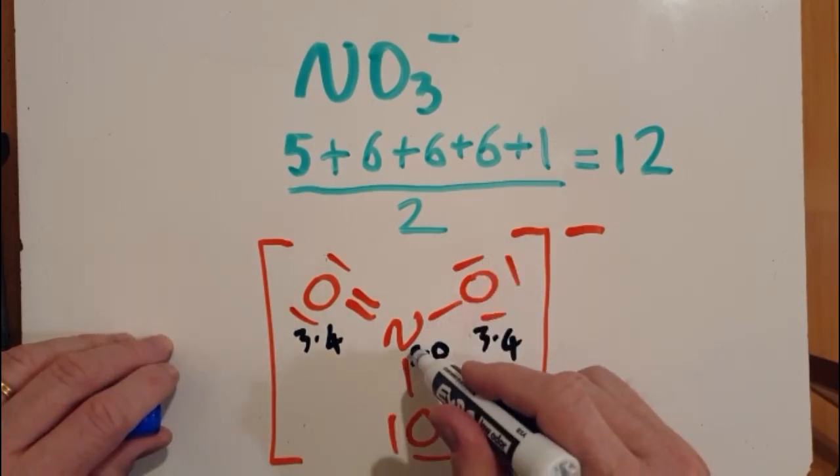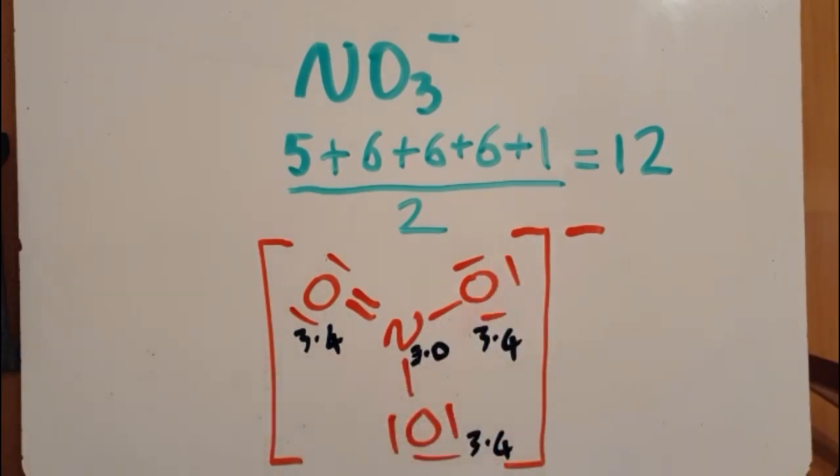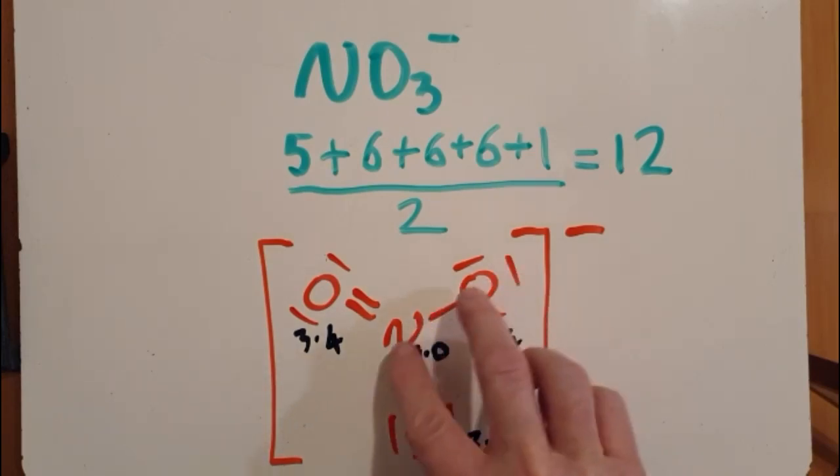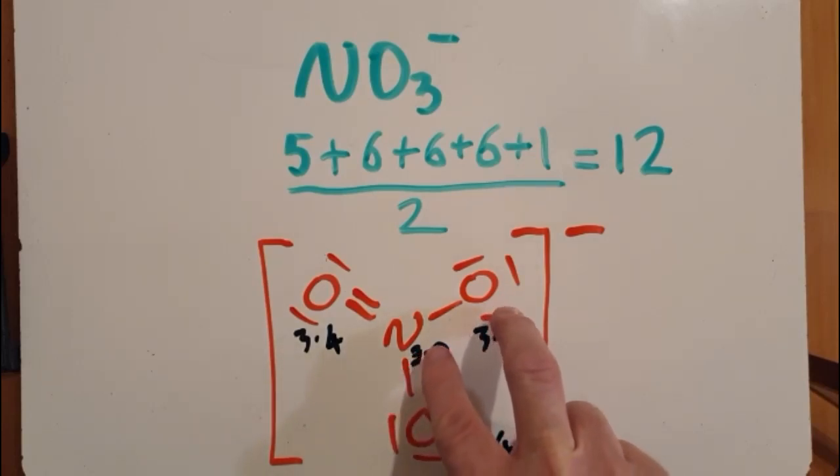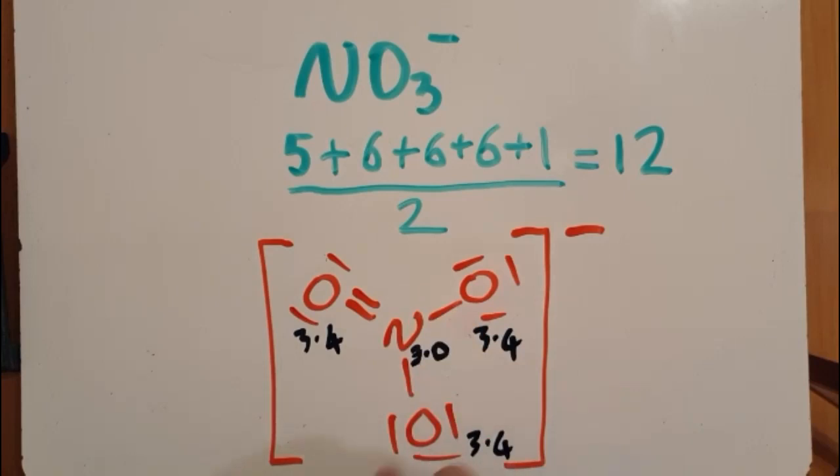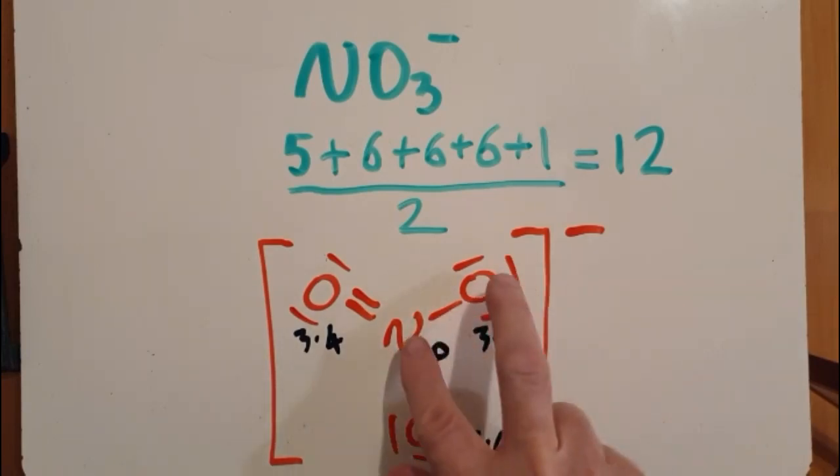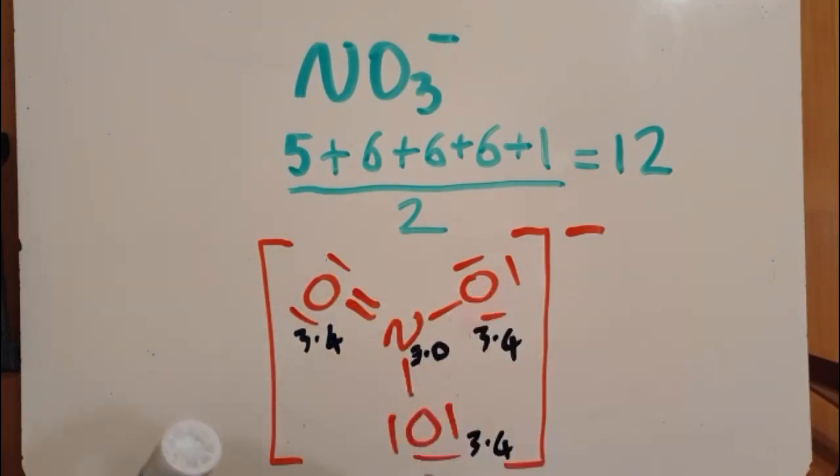So looking at the bond dipoles, is there an asymmetry of electron distribution around the bonds? Well, yes, there is. Nitrogen and oxygen don't attract the bonded electrons equally. Oxygen has a greater attraction. So there's a very small dipole, bond dipole here. So the bonds are polar.